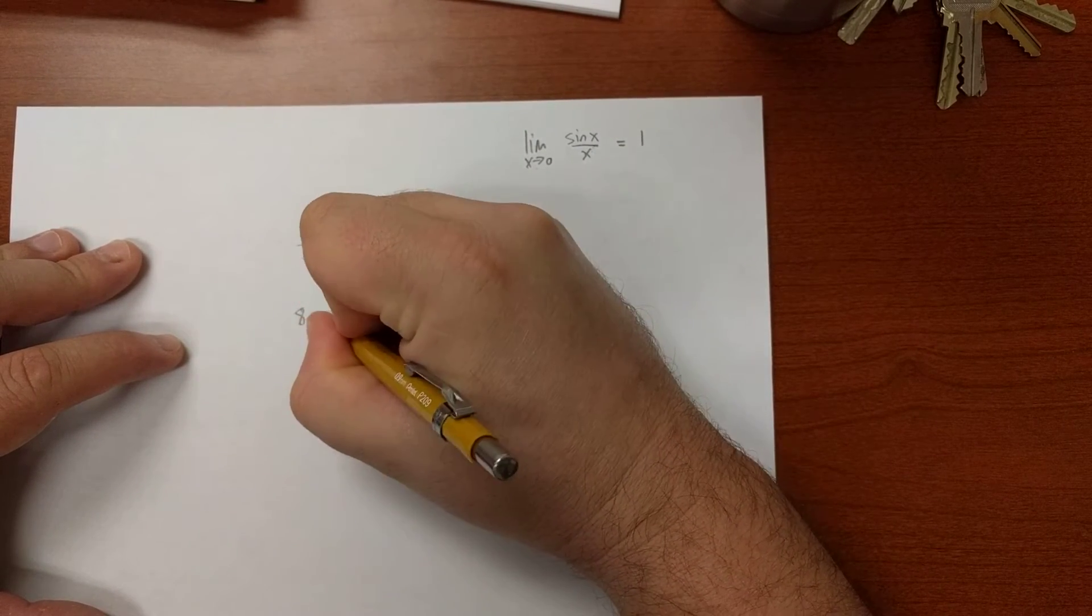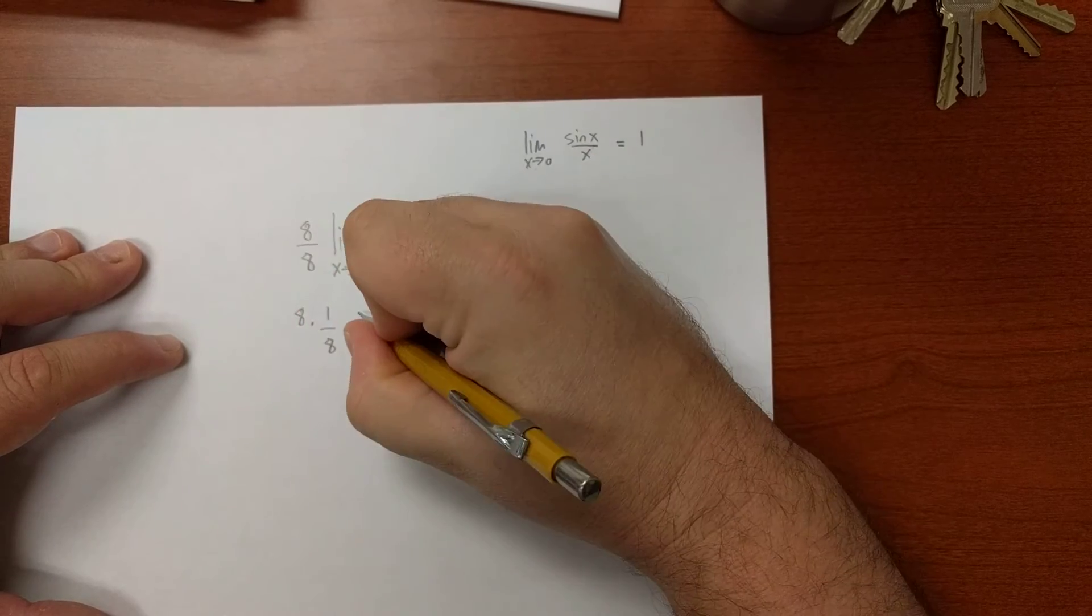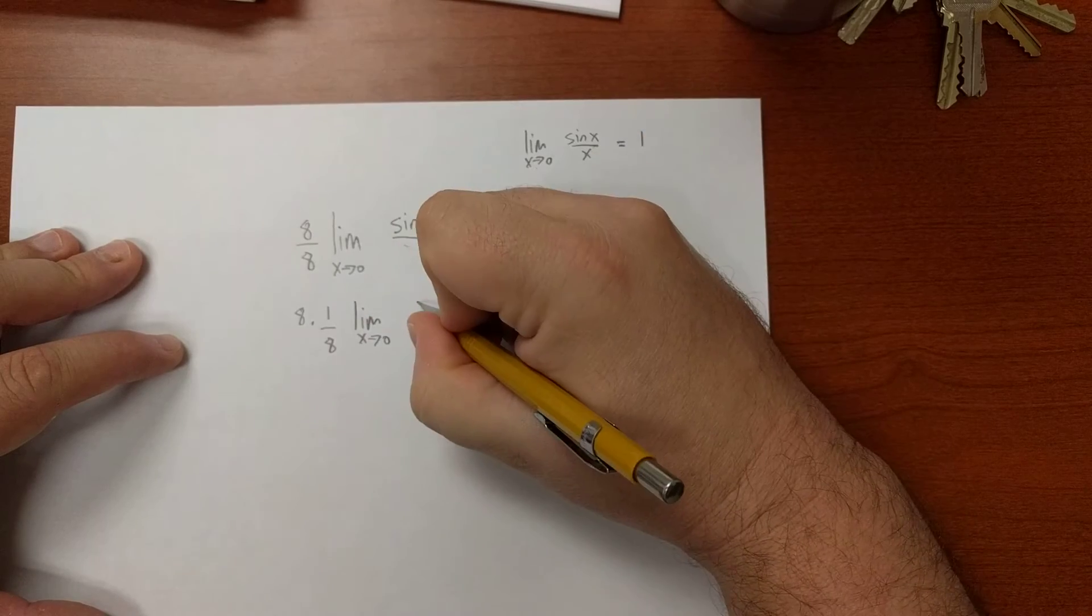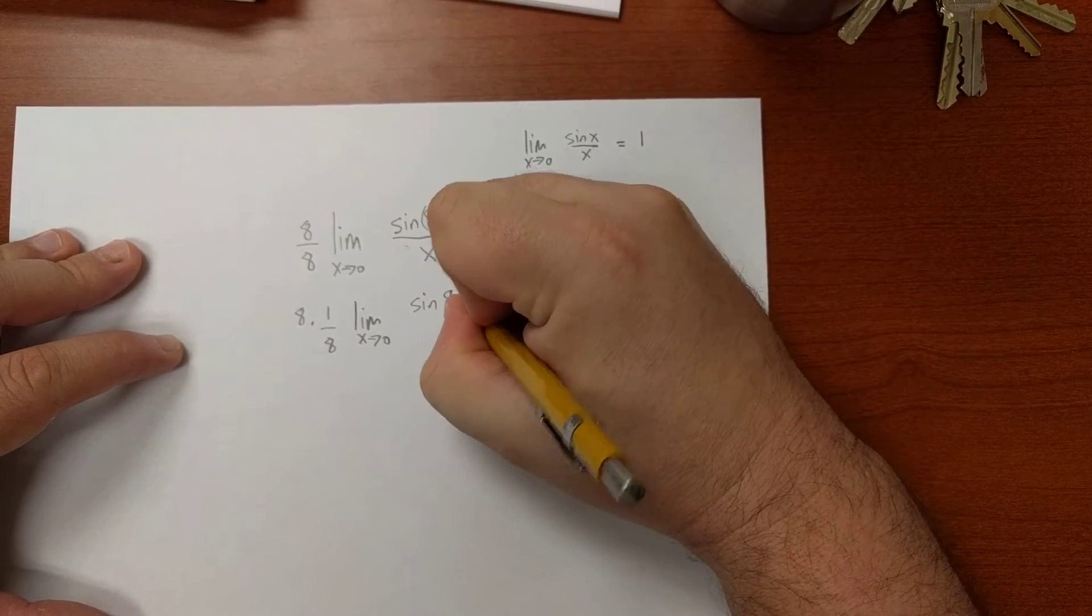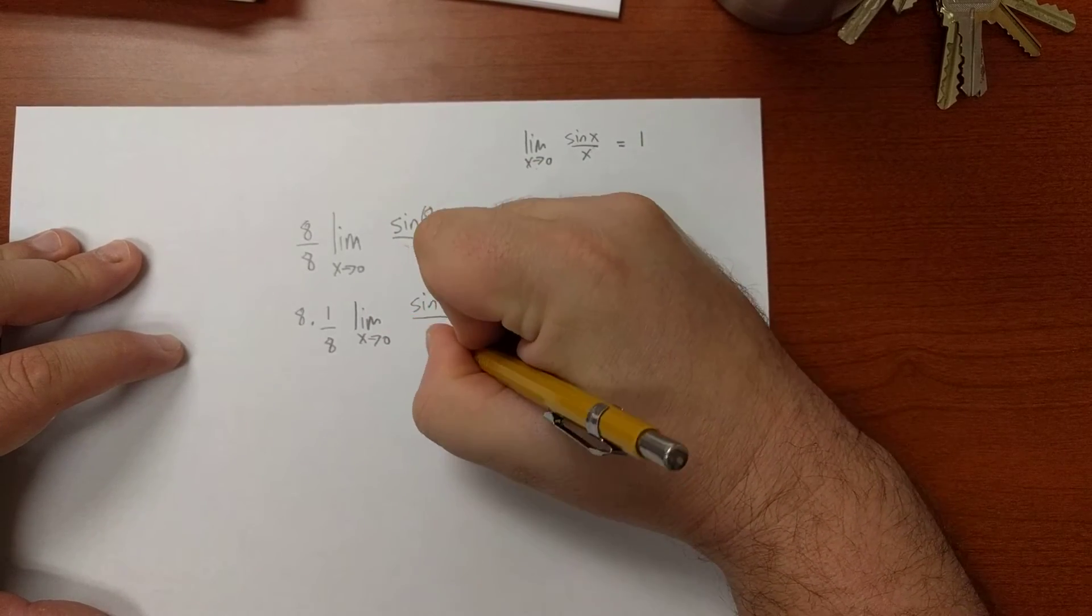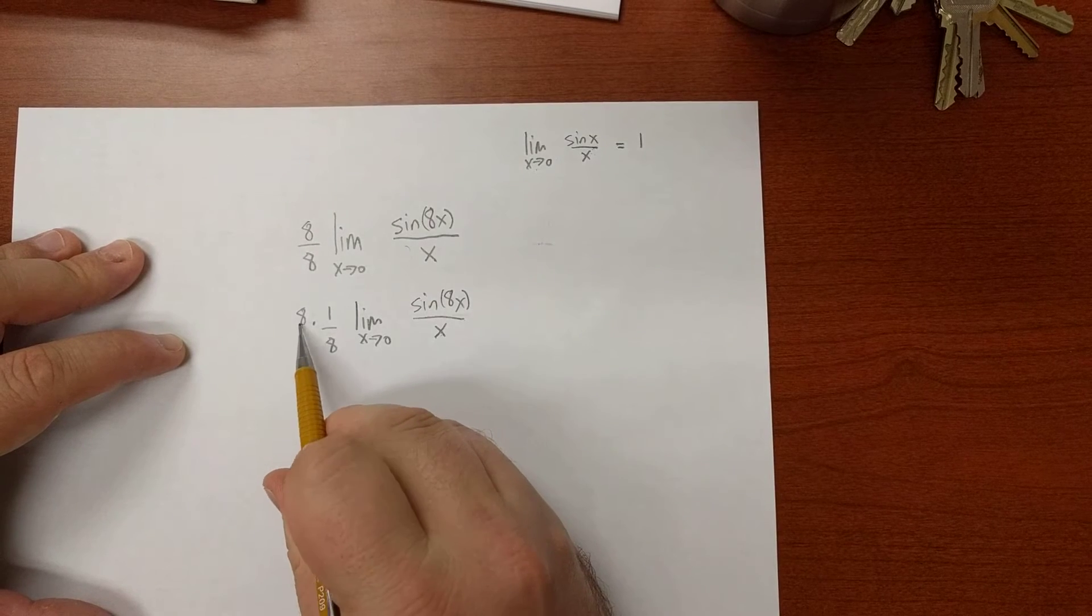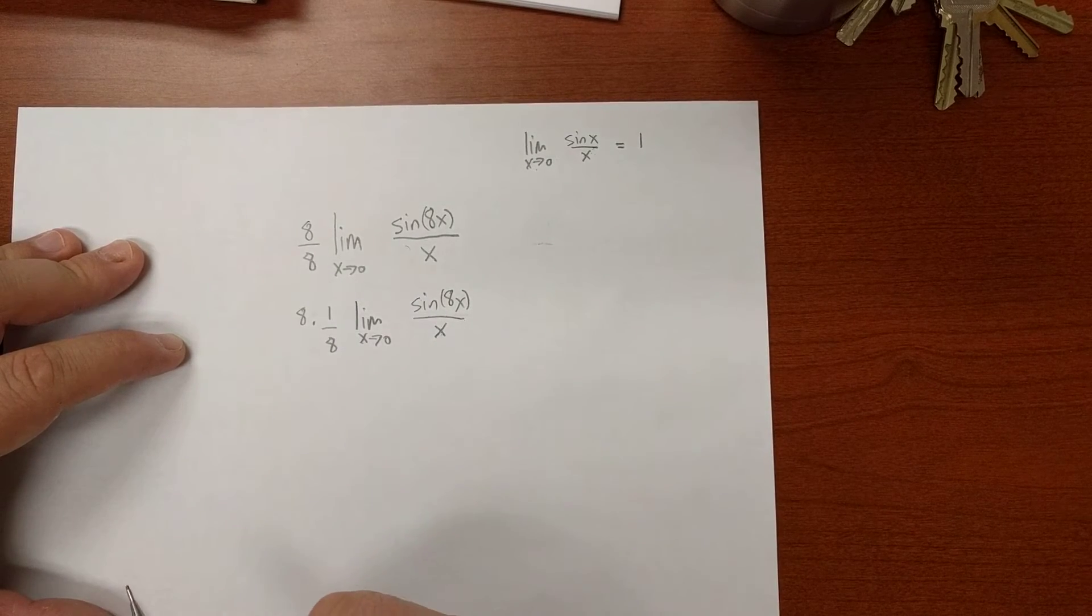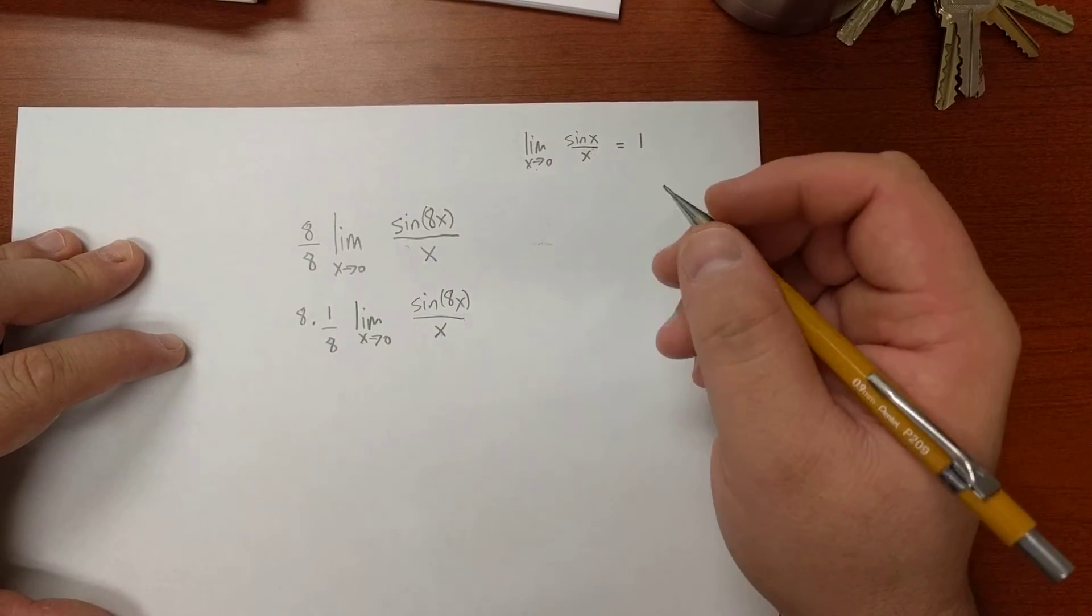Let's say that's the same thing as 8 times 1/8 times the limit as x approaches 0 of sin(8x)/x. Now, I can choose to bring inside the limit either one of those two constants. Let's say I just want to bring in the 1/8.